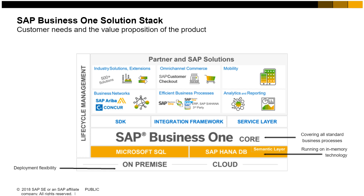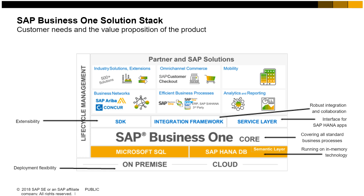Regardless of the architecture used, end-to-end business processes are the core of SAP Business One. There are many tools that enable partners and customers to build on or integrate to Business One. Functionality can be extended by using three development platforms: the software development kit, the integration framework, and the SAP Business One service layer. There are multiple partner and SAP-provided solutions to extend the scope to meet companies' needs, such as industry solutions, web services, networks, mobility, and analytic options.